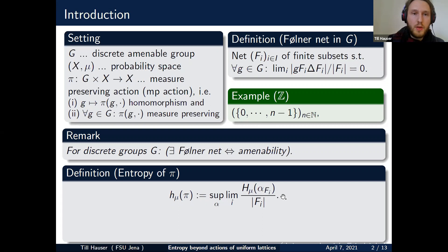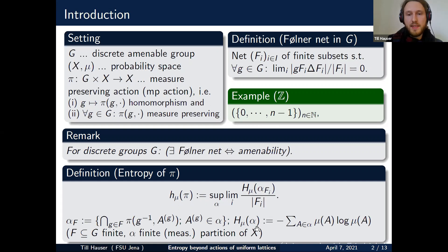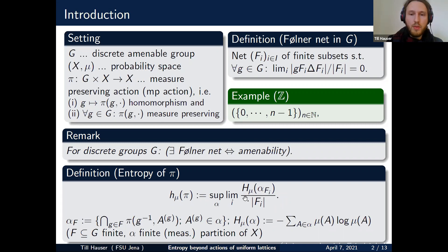Basically, this is the definition of the entropy of such a measure preserving action. H_mu of alpha is just the usual static entropy, and alpha lower F means the common refinement where you take some finite measurable partition alpha, shift it around in space by times from F, and take the common refinement. Two comments: first, you can choose any Følner net and you will always obtain the same limit, and you will also always obtain a limit. This is most often done by a sub-additivity argument.